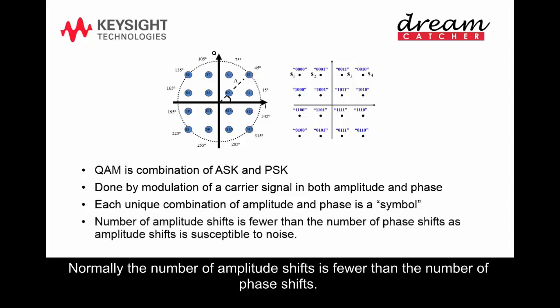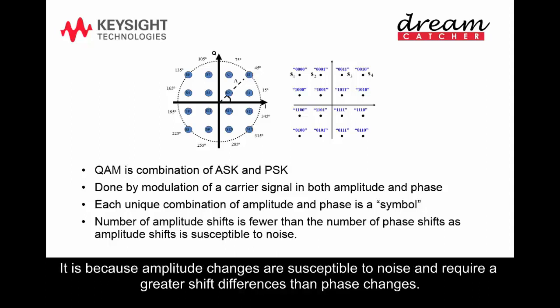Normally, the number of amplitude shifts is fewer than the number of phase shifts. This is because amplitude changes are susceptible to noise and require greater shift differences than phase changes.